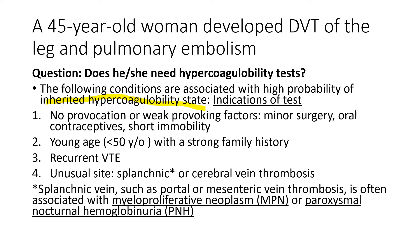When she has no provocation or weak provoking factors such as minor surgery, contraceptives, or short immobility. Or when she is young, less than 50 years old, with a strong family history. When she has recurrent deep vein thrombosis. When the thrombosis occurs in an unusual site such as splanchnic or cerebral veins, you suspect not only hereditary thrombophilia but also underlying myeloproliferative neoplasm or paroxysmal nocturnal hemoglobinuria.